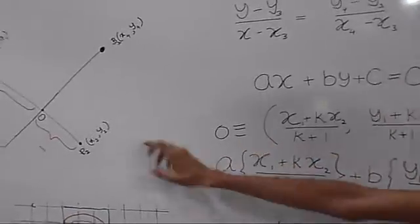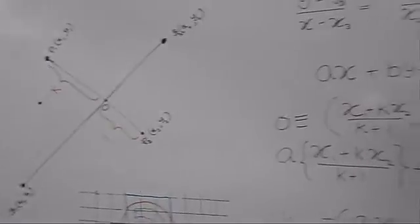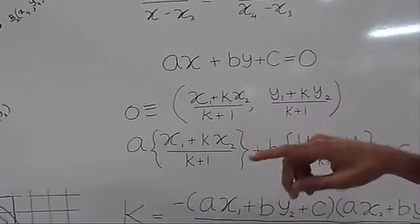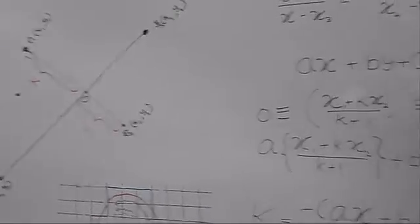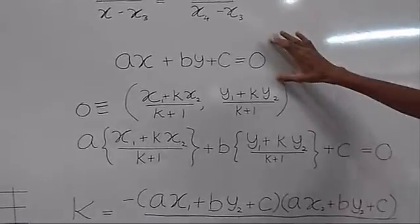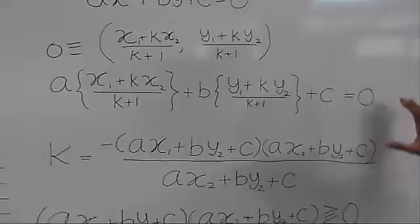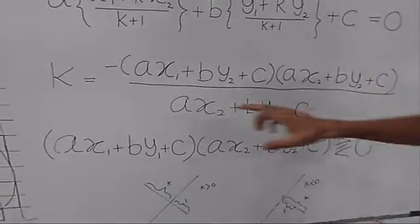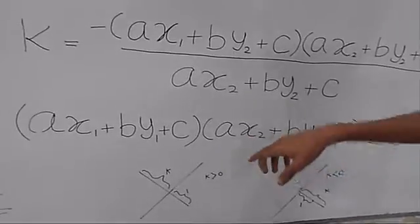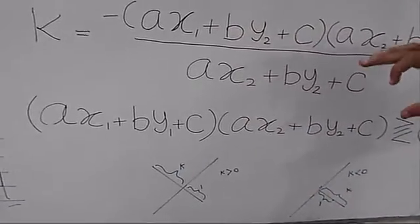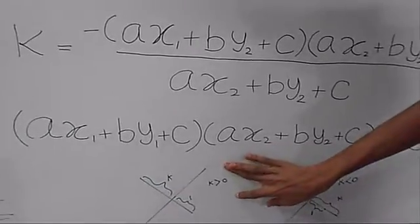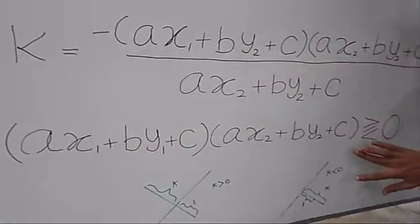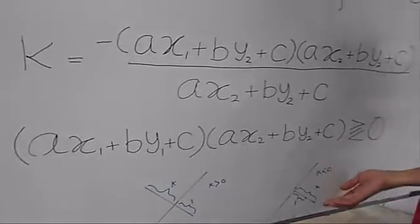We can obtain the coordinates of point O like this. Because the location O is located on the line B1 and B2, it satisfies this equation. By substituting its coordinate to this equation, we can have a value for K by solving this. By considering this K value, we can decide whether P1 is located inside or outside the boundary. If K value is greater than 0, our given point P1 is located outside the boundary, and if the K value is less than 0, it will be located inside the boundary.